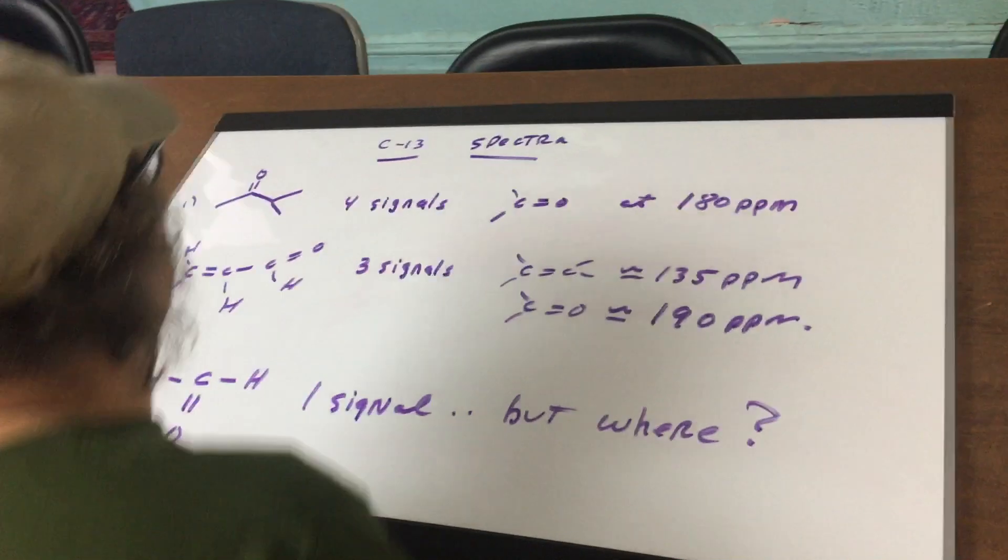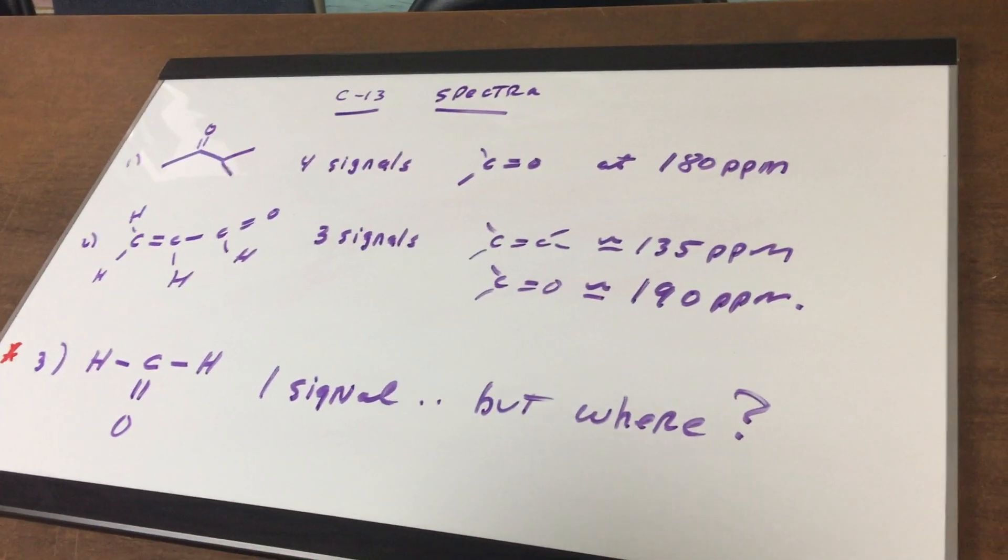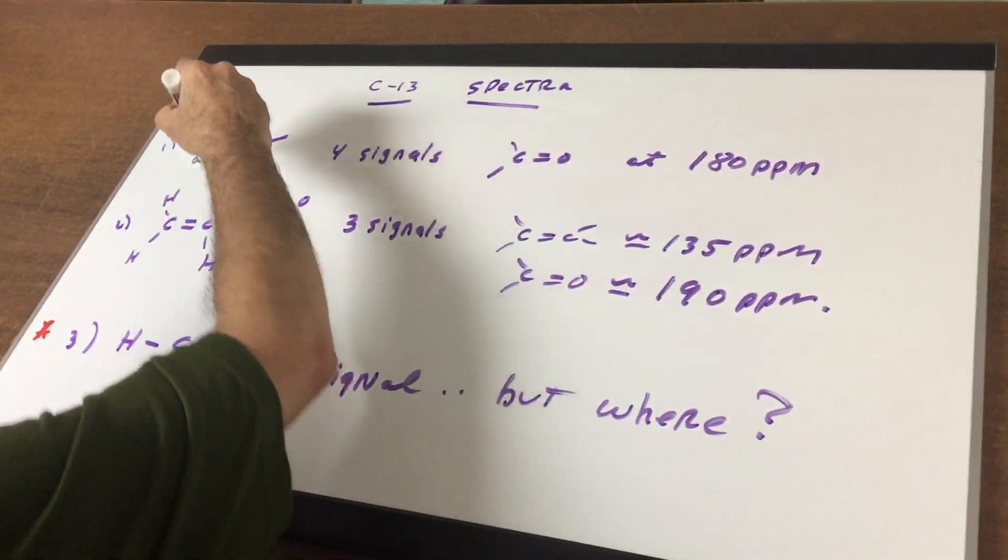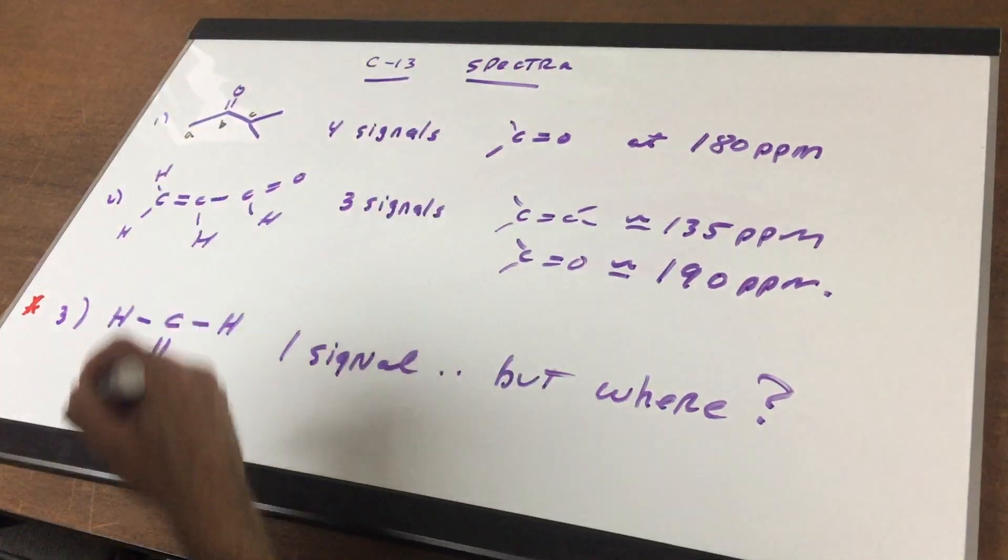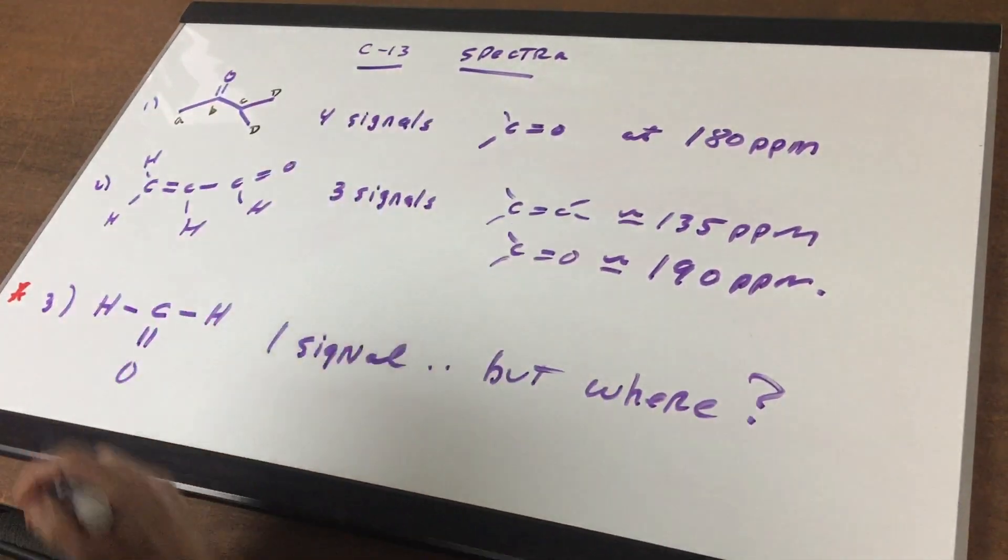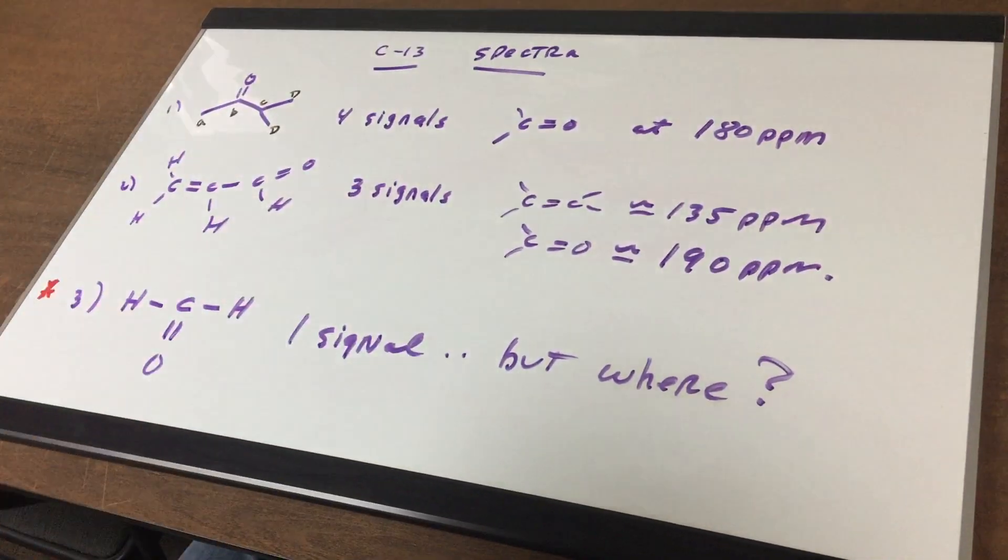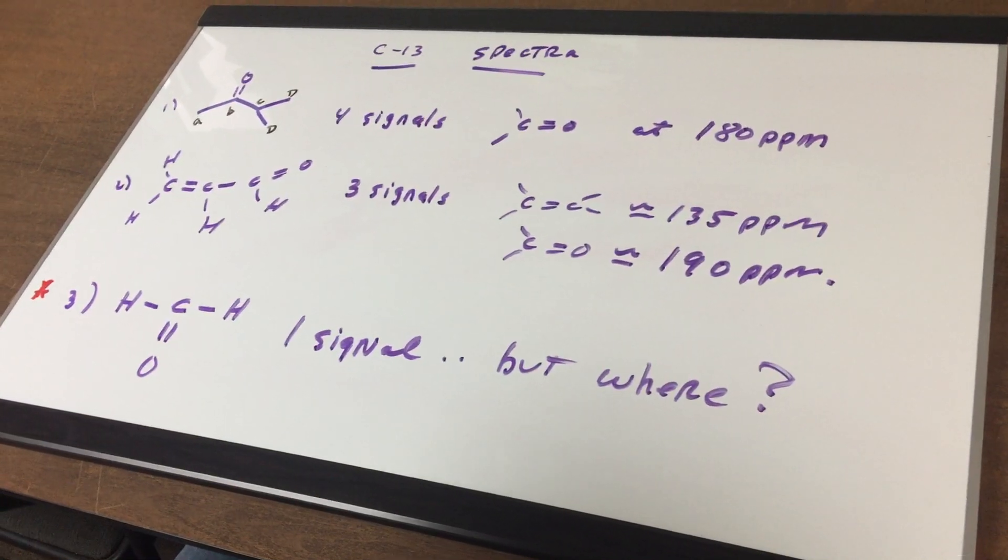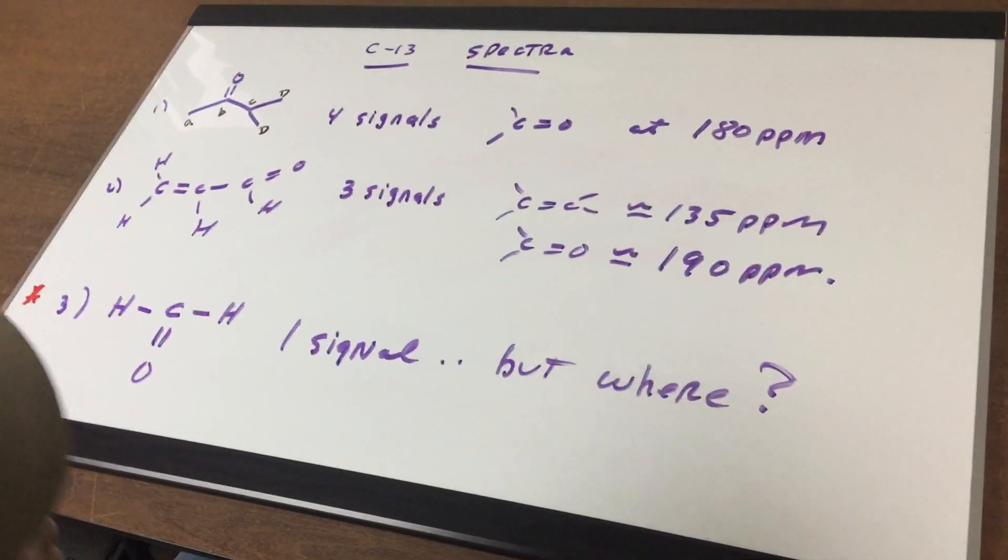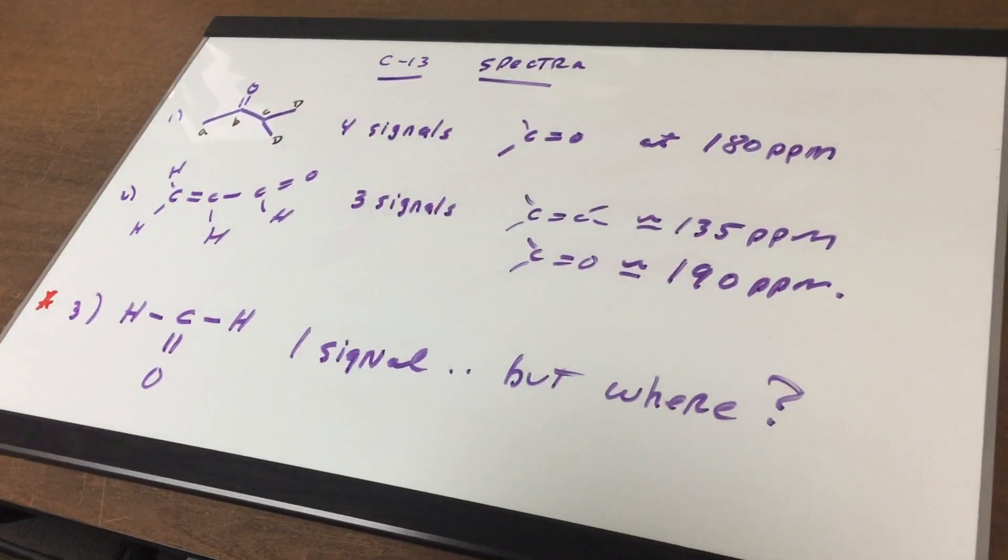The first thing I want to do is we want to look at this first compound and I want to know how many signals you're going to get in a carbon-13. Well as you can see if I label these as the carbon A this is carbon B and this is carbon C and these two of course would be the same because they're coming from the same area of carbon which is C. We get four signals and I'd like you to remember one big landmark is around 180 ppms. The 180 is the downfield signal.